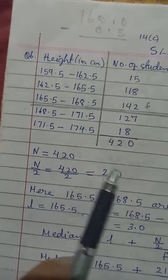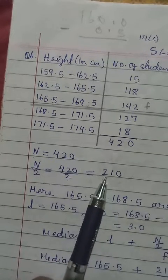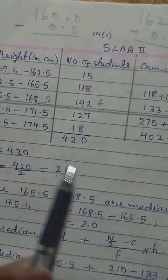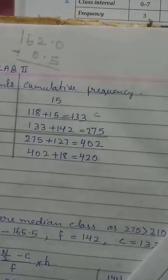So the cumulative frequency, which is nearer to this, will give us the median class. So you check from the cumulative frequency. What we have? We have 210. So where it is near.